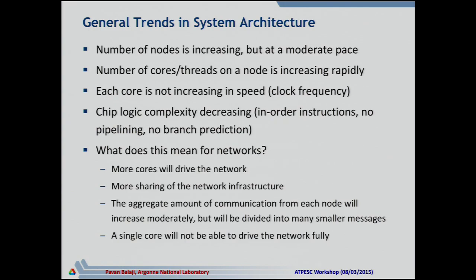What does this mean for the network architecture itself? There are more cores driving a network. Traditionally a single fat core would drive network data as fast as possible, but we're moving toward a trend where lots of tiny cores are trying to drive a network. The aggregate amount of communication from each node is not changing much — it's more fine-grained. A single core or thread is no longer sufficient to drive the full performance of the network, and that will continue to be true in the future.